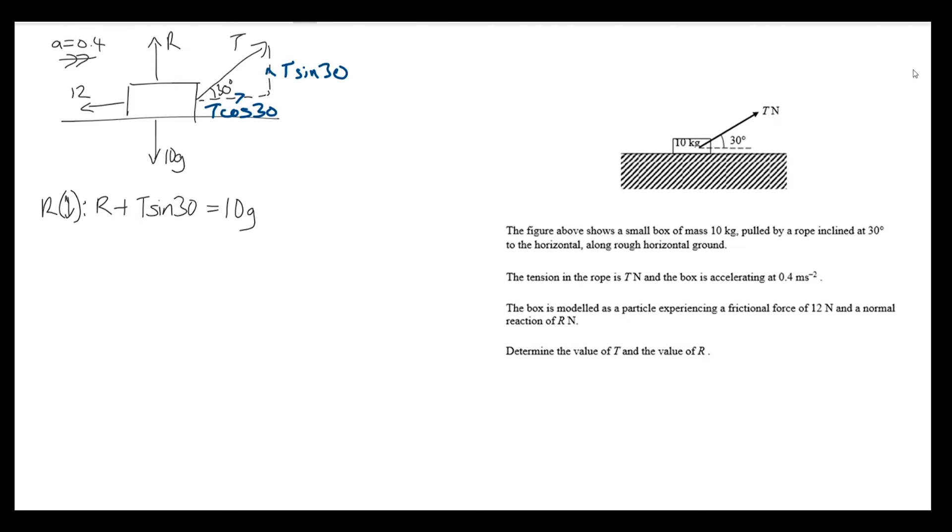So here's my first equation with two unknowns, r and t. Let's see if we can set up a second equation that also has two unknowns. I'm anticipating simultaneous equations. We're going to use Newton's second law, F equals ma, using the resultant force.